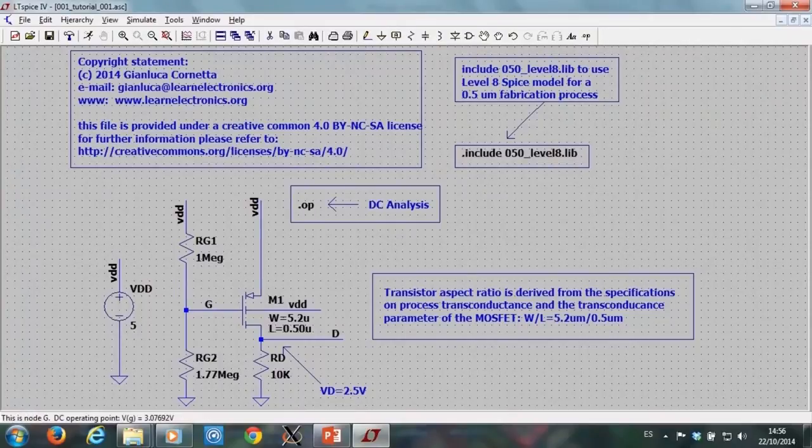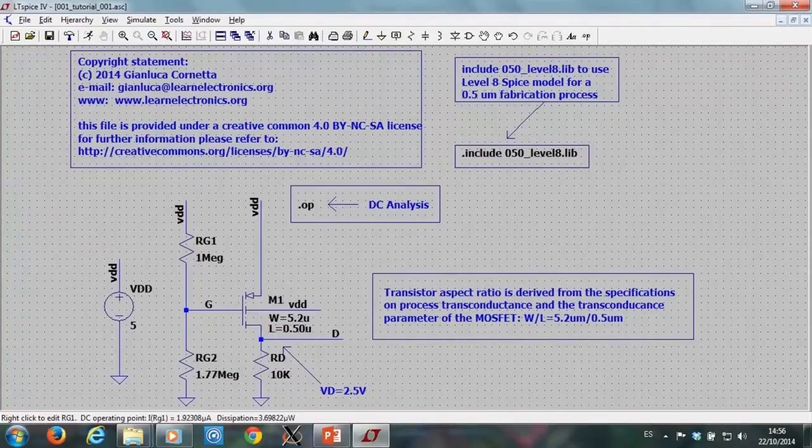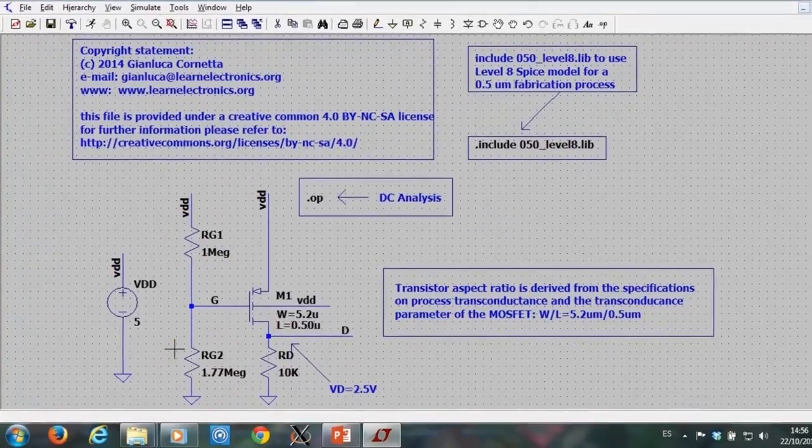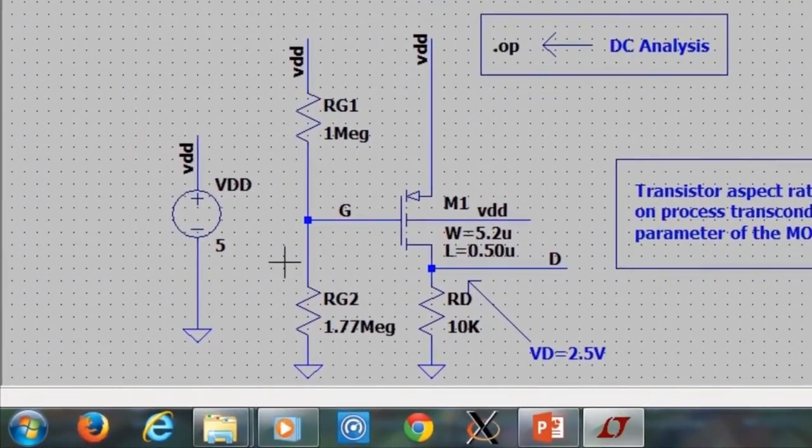I have input all the values of the components. RG1 is 1 megaohm, RG2 is 1.77 megaohms, the supply voltage is 5V, and the drain resistance is 10K.